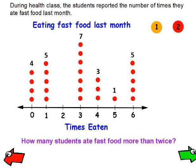Let's try to answer some questions. During a health class, the students reported the number of times they ate fast food last month. There were 4 students that never ate fast food. There were 5 students that ate out one time. 7 of the students — consider each one of these dots a person — 7 of these students ate fast food 3 times last month.